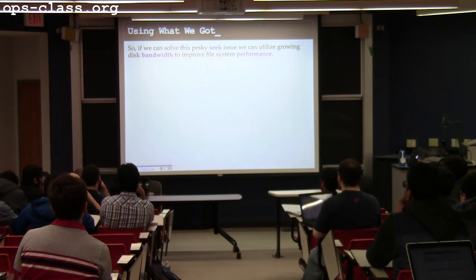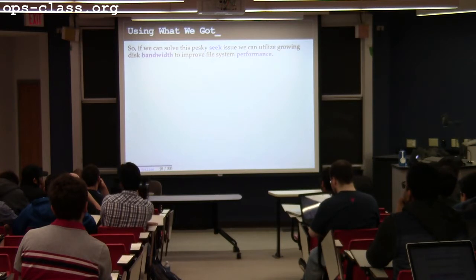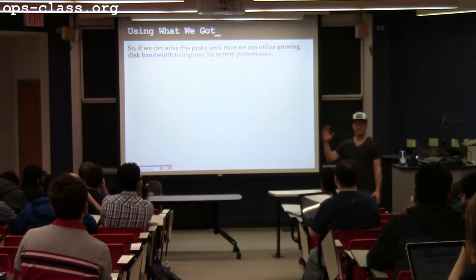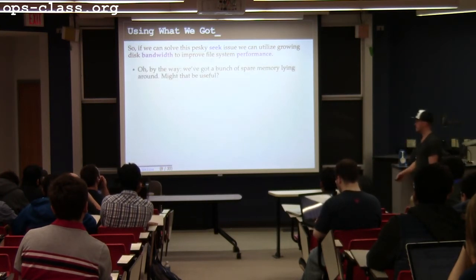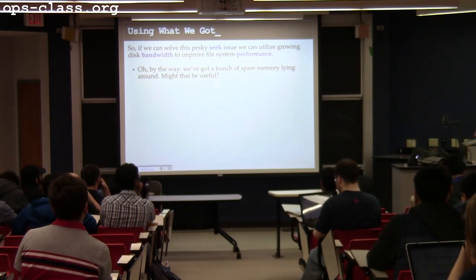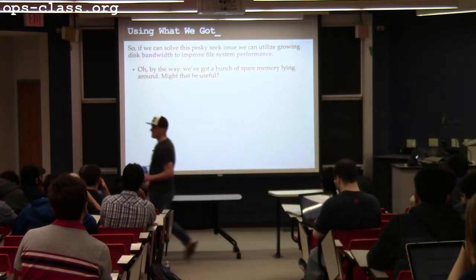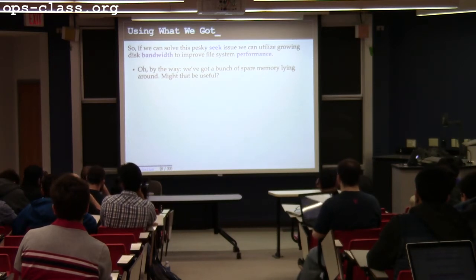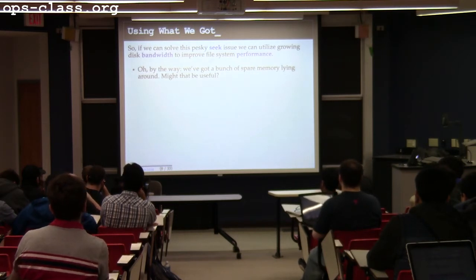Can we come up with a file system design that tries to avoid disk seeks? And the other thing that's nice: maybe we can find a way to put all the spare memory — that 128 megabytes — to use as well. These are the design parameters of LFS, responding to technology trends. I've got more memory and enough bandwidth to get things back and forth to disk quickly, but disk seeks are still really slow, so I'm trying to find a way to avoid seeks.